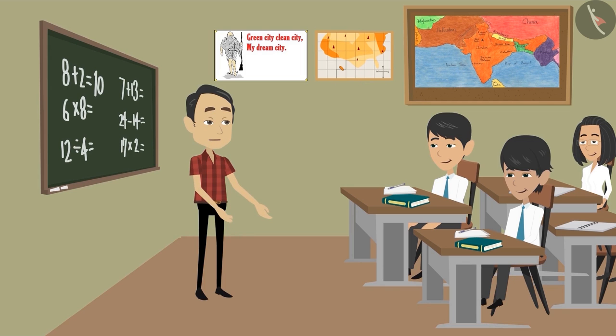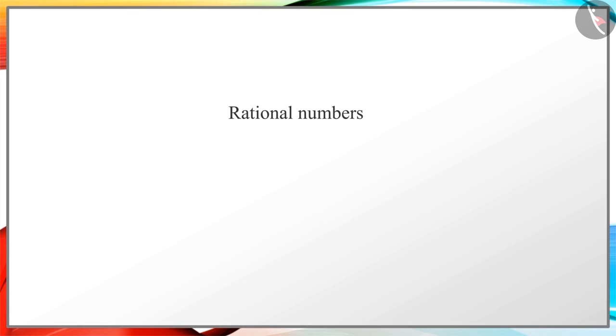Children, now can you tell the definition of rational numbers? Sir, rational numbers are numbers that can be written in the form of p by q, where p and q are integers and q is not equal to zero.